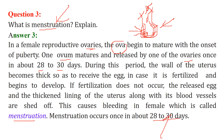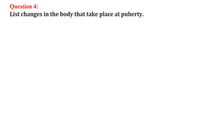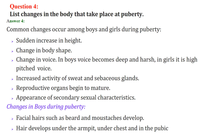Menstruation occurs once in about 28 to 30 days, though it can vary in some women. Changes that take place at puberty: there are certain changes in boys and girls. In common — sudden increase in height, change in body shape, change in voice (boys' voices become deep and harsh; girls' voices are pitched high), and sweat and sebaceous glands have more activity.